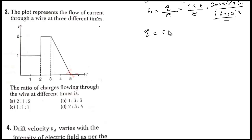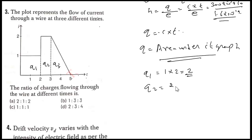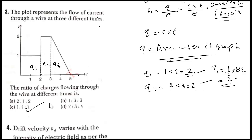Since q = i·t, and we have an i-t graph, the charge equals the area under the i-t graph. So Q1 (from 0 to 2) = 1 × 2 = 2. Q2 (from 2 to 3) = 2 × 1 = 2. Q3 (from 3 to 5) = ½ × base × height = ½ × 2 × 2 = 2. All values equal 2, so the ratio Q1 : Q2 : Q3 = 1 : 1 : 1.